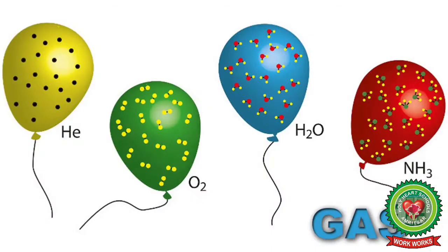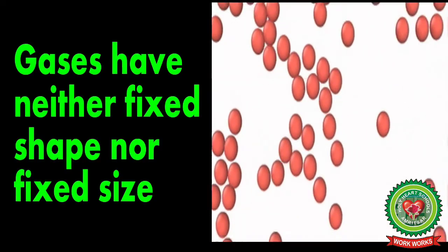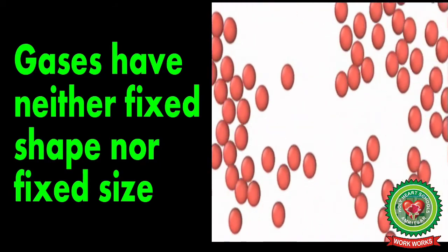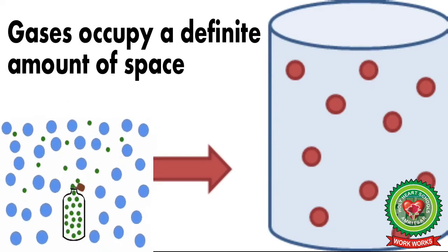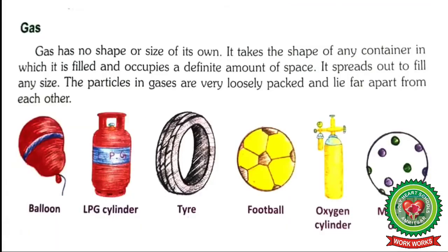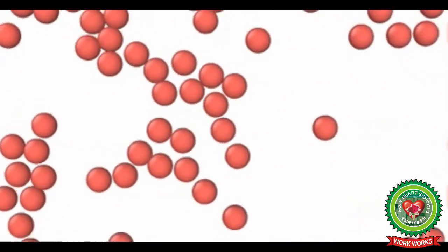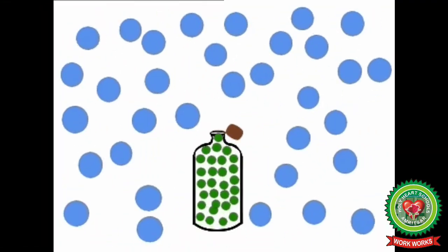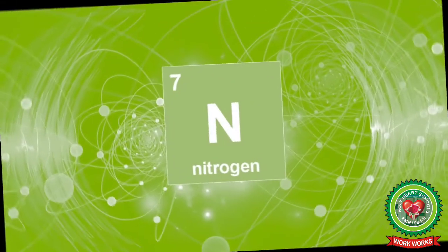The next state of matter is gas. Gas has no fixed shape or size of its own. It takes the shape of any container in which it is filled and spreads out to fill any size. The particles in gases are very loosely packed and lie far apart from each other, and the molecules move freely. Examples of gases are oxygen and nitrogen.